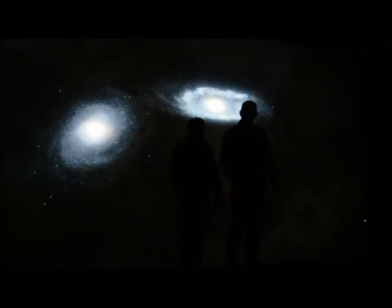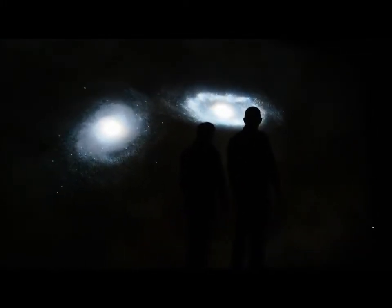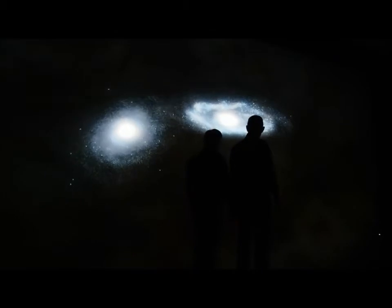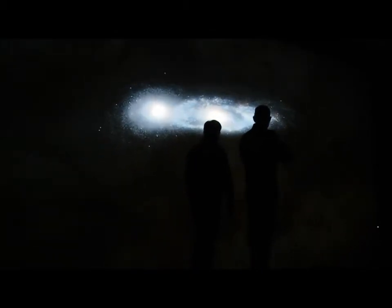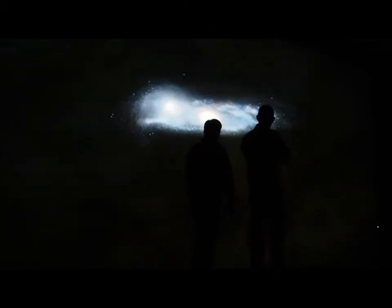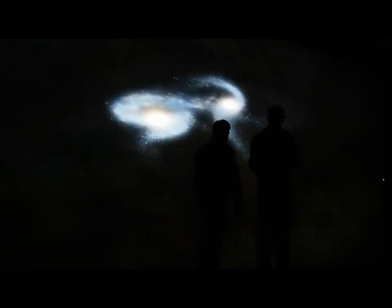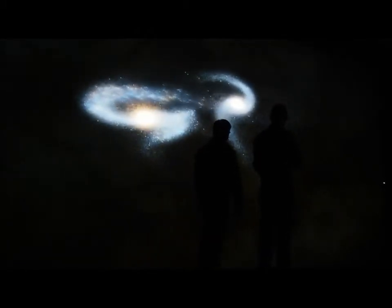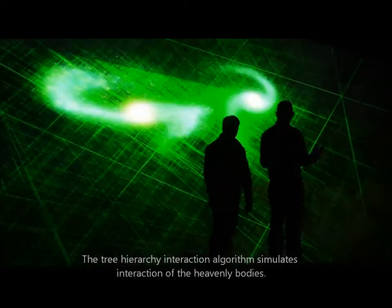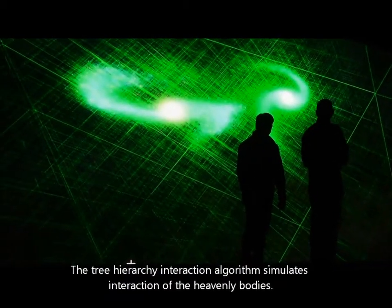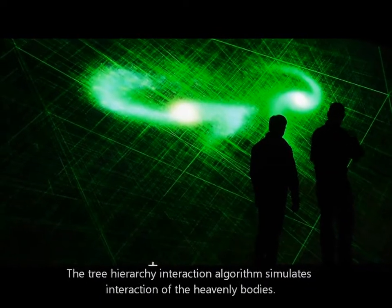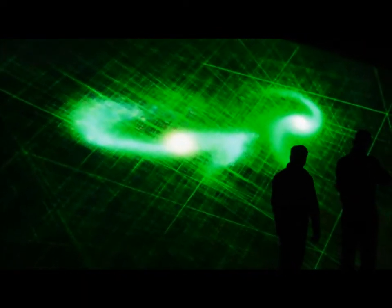The Andromeda Galaxy is heading towards us, and we are going to end up merging — not the first pass, but later on. This code is based on a thing called a tree code, where instead of interacting everybody with every other body, we create this tree hierarchy of interactions. And we can see the hierarchy right here.